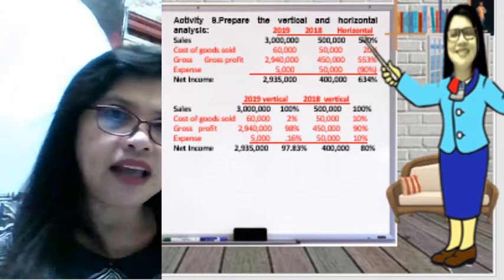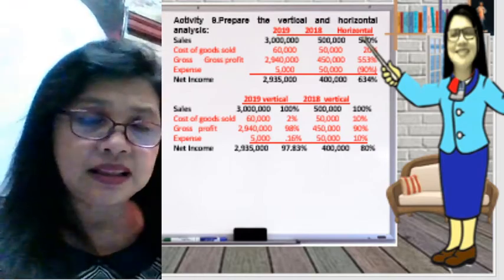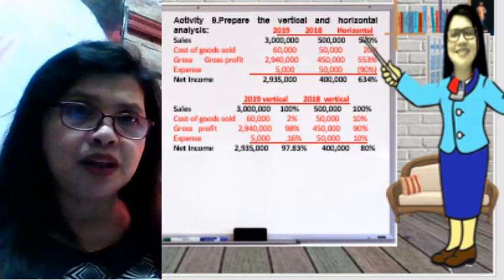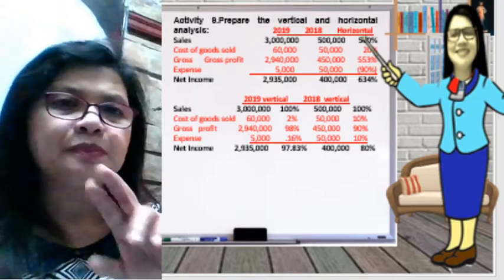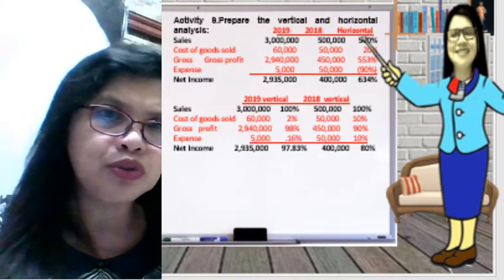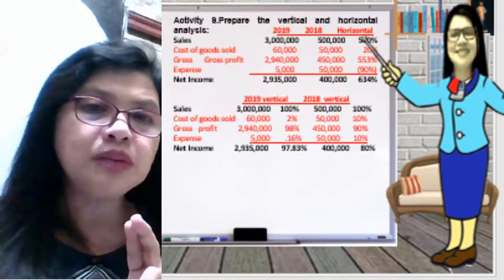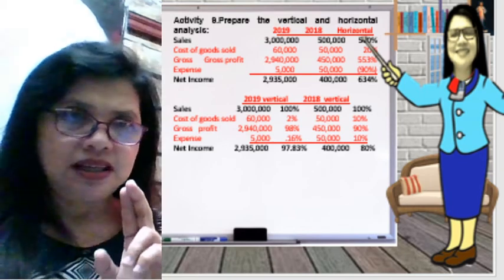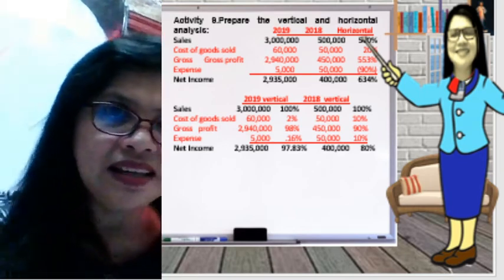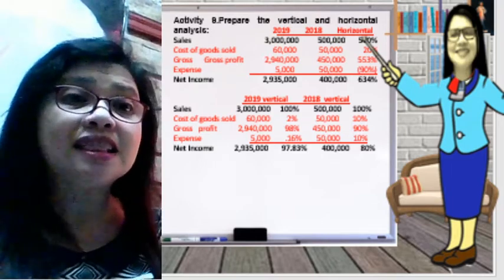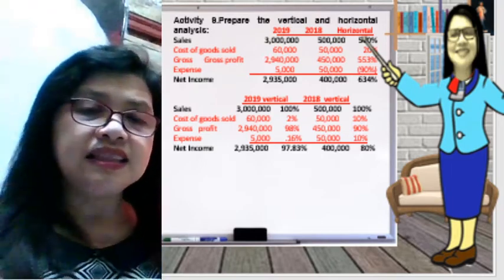So the net income also increased because of those changes. Net income increased from 400,000 to 2,935,000 — a 634% increase in performance from 2019.